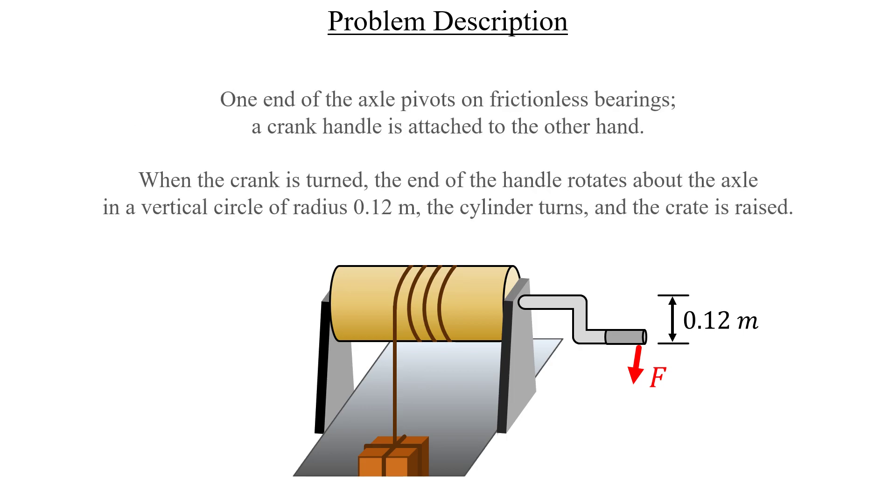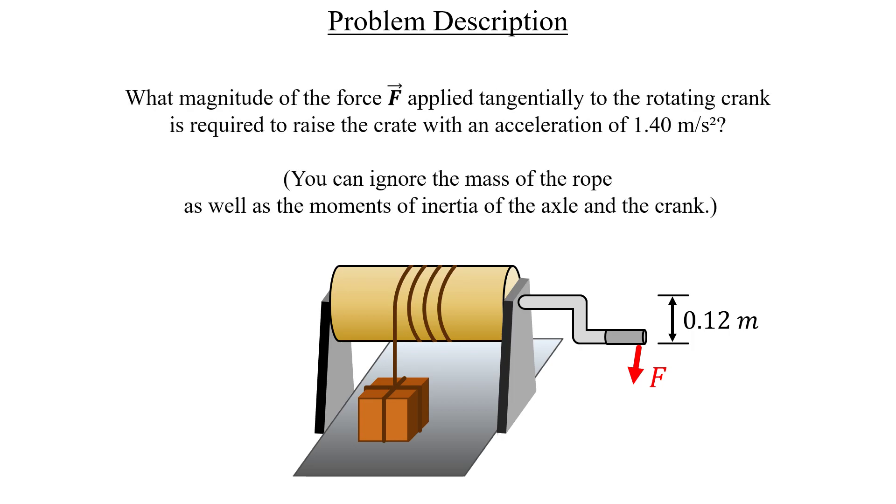Attached to the cylinder is a crank handle. And as we turn it, the crate rises upwards and the handle will move along a small circular path. What we need to do is figure out how much force needs to be applied to the handle in order for the crate to accelerate at the value given here.